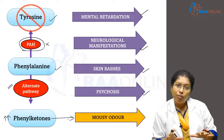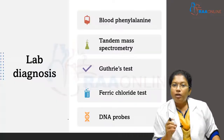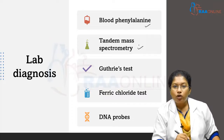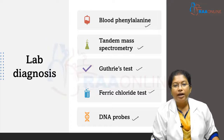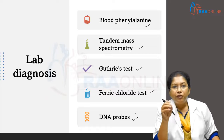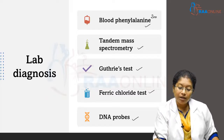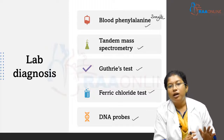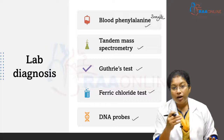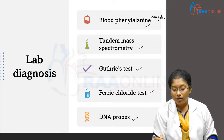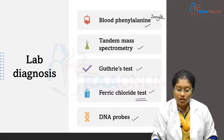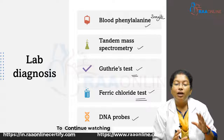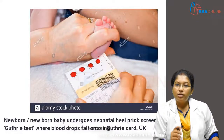For laboratory diagnosis, we check blood phenylalanine levels using tandem mass spectrometry, the Guthrie test, the ferric chloride test, and DNA probes. In this case, blood phenylalanine was 20 milligrams per deciliter versus the normal of less than 1 milligram per deciliter, confirming elevated levels. The ferric chloride test and Guthrie test were both positive, and DNA probes can further analyze the enzyme defect.